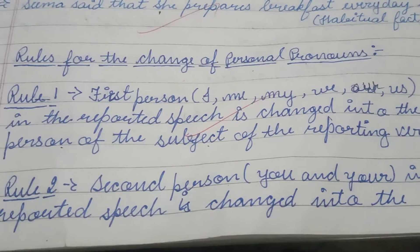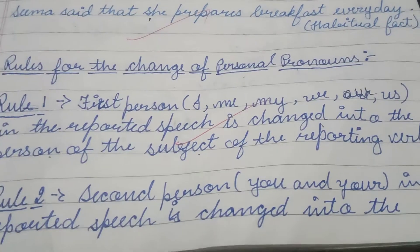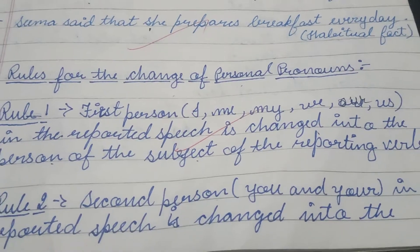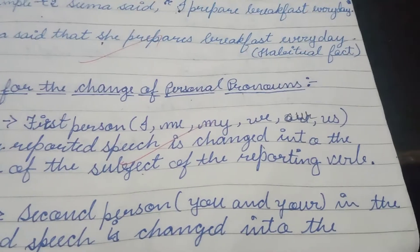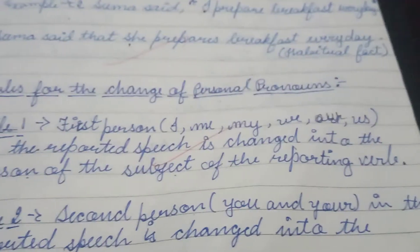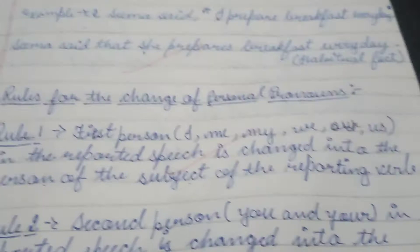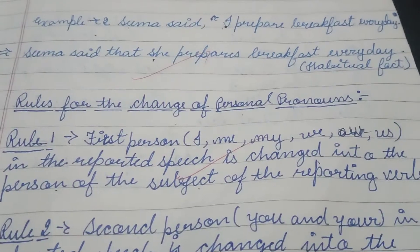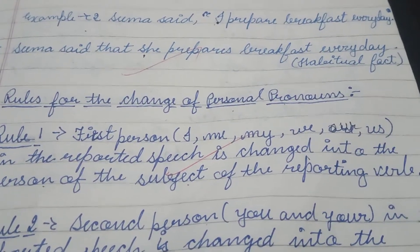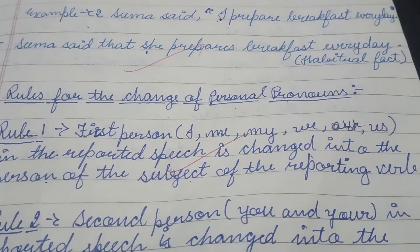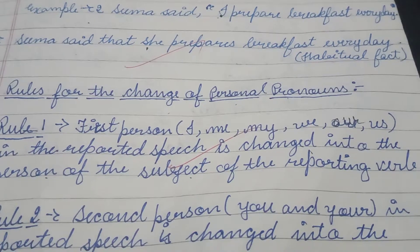Now there are three rules under the change of personal pronouns. Rule 1 is: first person — I, me, my, we, us, etc. — in the reported speech is changed into the person of the subject of the reporting verb. Now don't be confused. Just try to understand it thoroughly, slowly.